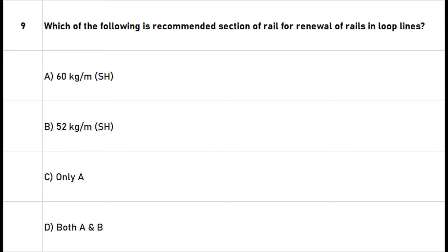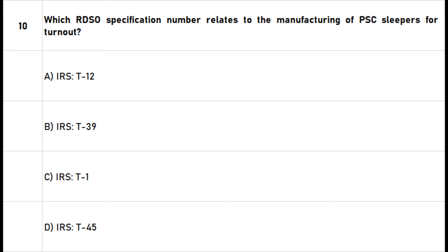Question 10: Which RDSO specification number relates to the manufacturing of PSC sleepers for turnout? A. IRST 12. B. IRST 39. C. IRST 1. D. IRST 45. The right answer is option D: IRST 45.